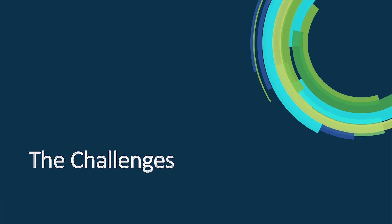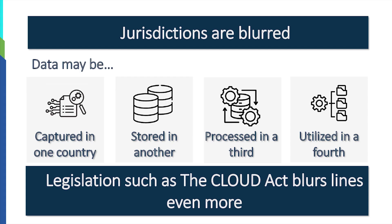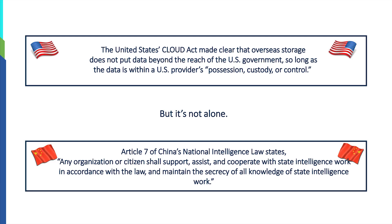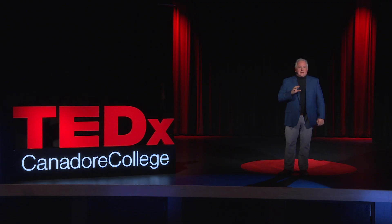What are the challenges? Jurisdictions are blurred — you can capture data in one country, store it in another, process it in a third, utilize it in a fourth, fifth, or sixth. Legislation such as the CLOUD Act blurs these lines even more. The CLOUD Act, a U.S.-based act invoked in 2018, made clear that data sitting outside the U.S. is actually accessible if controlled by an American-based company. In China, the national intelligence law requires companies and citizens to actively support gathering intelligence globally and to not disclose the fact that they're doing so. Two countries both able to grab data outside their native country and use it for reasons we don't necessarily know about.